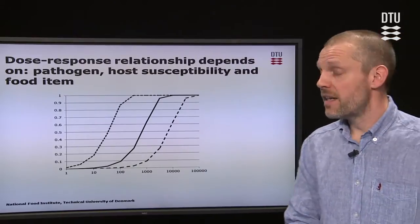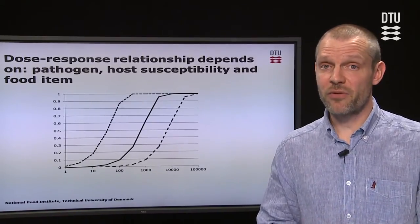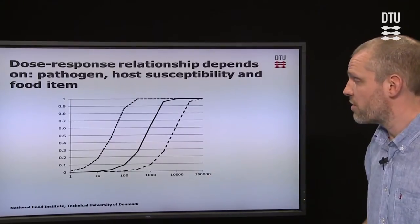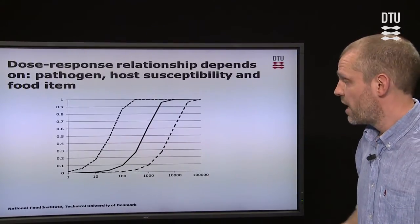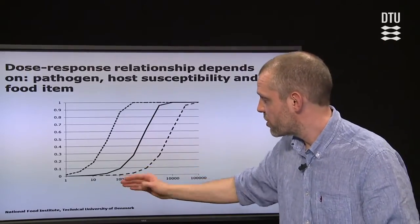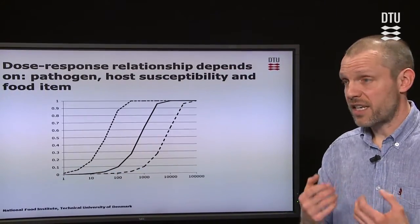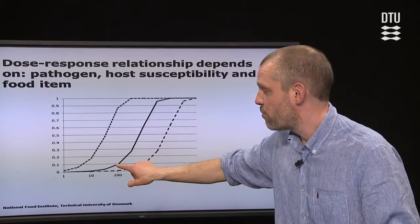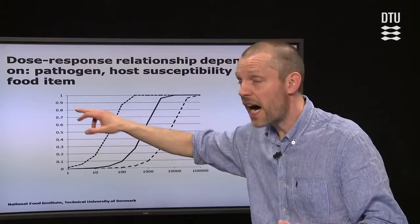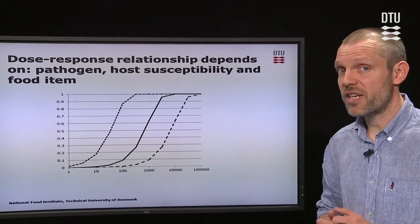The dose-response relationship depends on both the pathogen, the host susceptibility, and the food item. We now have three dose-response curves at three different levels. If you are exposed to 100 CFUs, the probability can be very low — this could be a pathogen like Salmonella. If you are exposed to 100 Campylobacter, the probability of disease is much higher. And if you are exposed to 100 parasites like Cryptosporidium, you get a really high probability of developing the disease. So the infectivity of the pathogen has a strong influence.